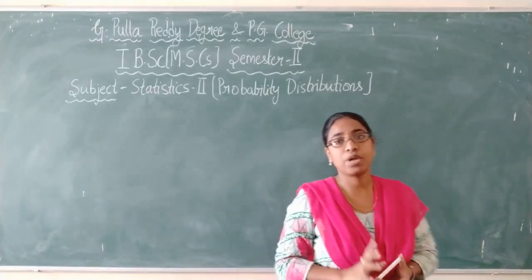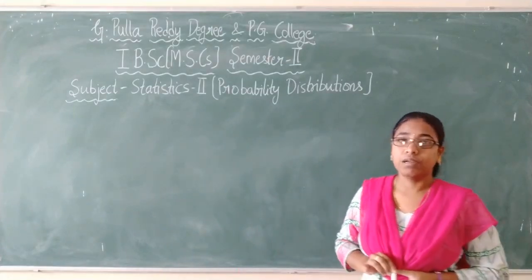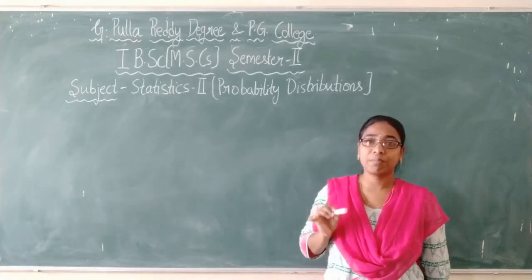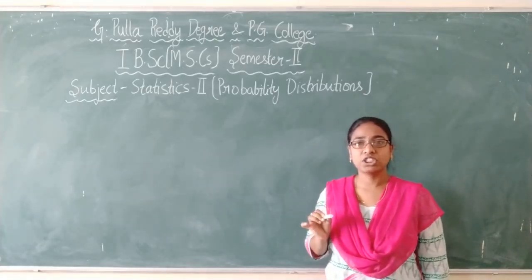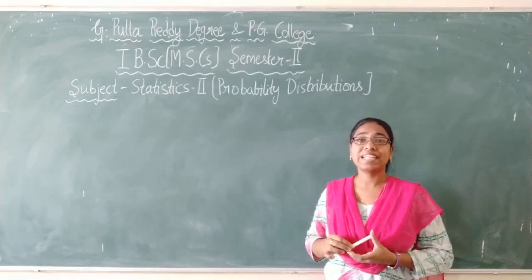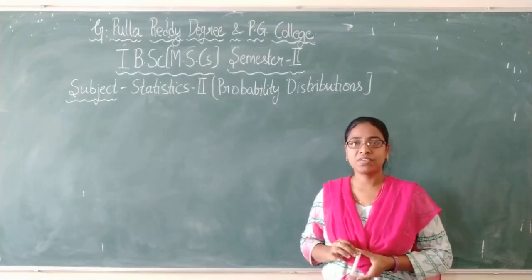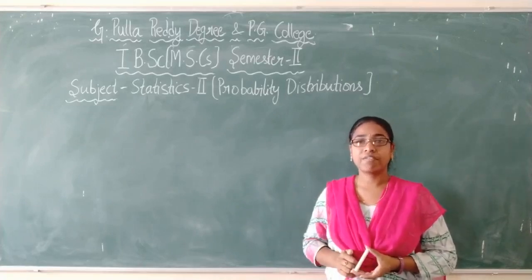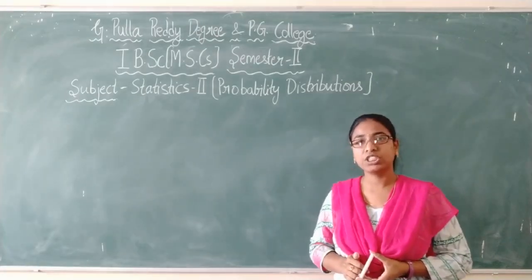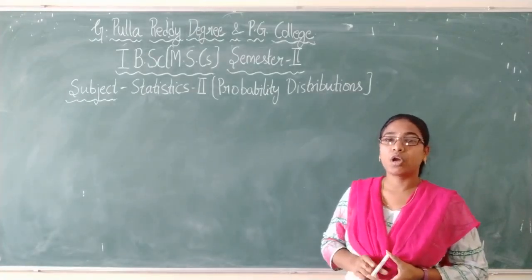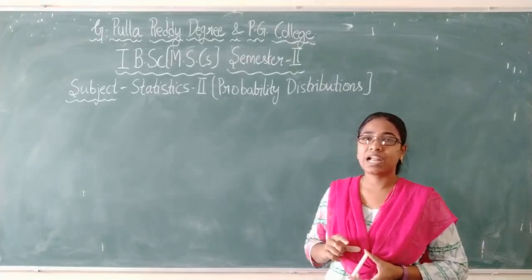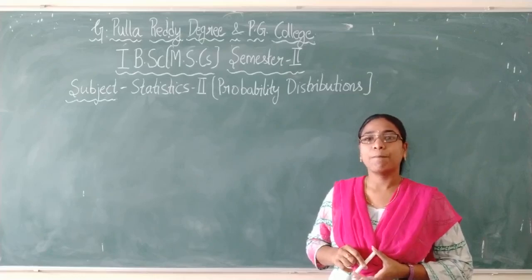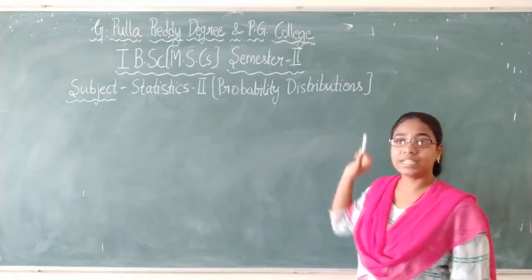We have studied these two types of random variables before. We also studied the concepts of PMF and PDF — that is probability mass function and probability density function. The probability function assigned to a discrete random variable is called the probability mass function, and the probability function assigned to a continuous random variable is called the probability density function.